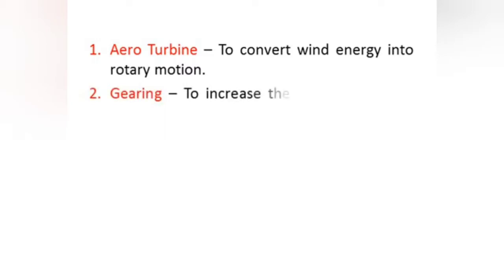The next component is gearing. It is a gearbox which increases the speed of turbine shaft. Because we have to increase the speed, as we have seen in previous presentation that power is directly proportional to v cubed, that is cube of velocity. Therefore we are using gearbox to increase the speed of turbine shaft.